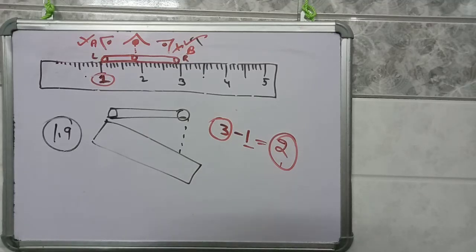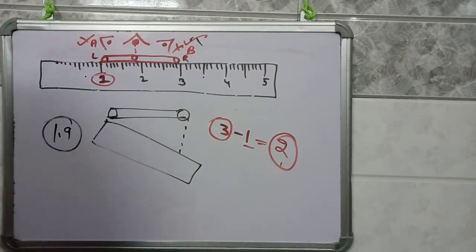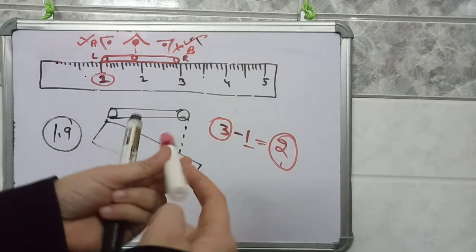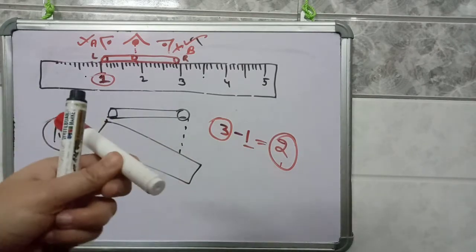So let's continue our topic. If you want to measure the length of an object which is not in a straight line shape, for example you want to measure the diameter of this object, then what will you do?